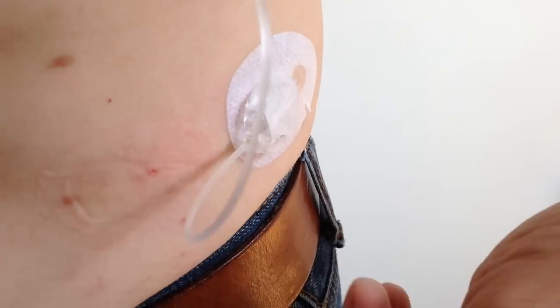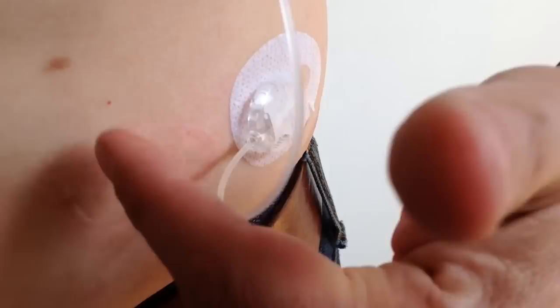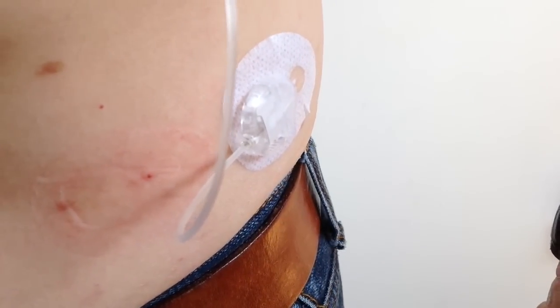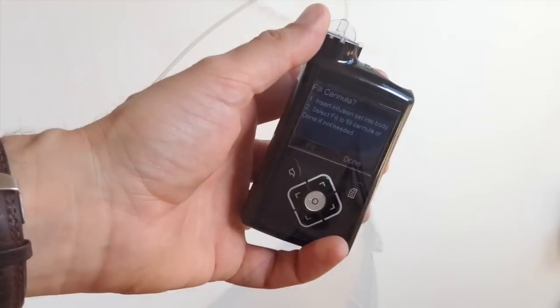You can see it's fairly, there's not a lot of discoloration there. There's just a tiny mark where the cannula actually went in. I'll put a little spot of Savlon on that. A little bit of antiseptic cream. And that'll clear up in no time at all. Now back out on the pump.